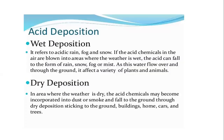Wet deposition refers to acidic rain, fog, and snow. If the acid chemicals in the air are blown into areas where the weather is wet, the acid can fall as rain, snow, fog, or mist. As this water flows over and through the ground, it can affect a variety of plants and animals. In areas where the weather is dry, acid chemicals become incorporated into dust or smoke and fall to the ground through dry deposition, affecting ground, buildings, homes, cars, and trees.